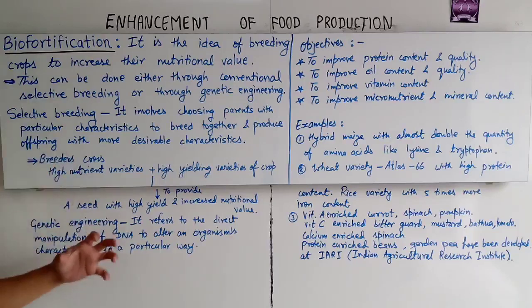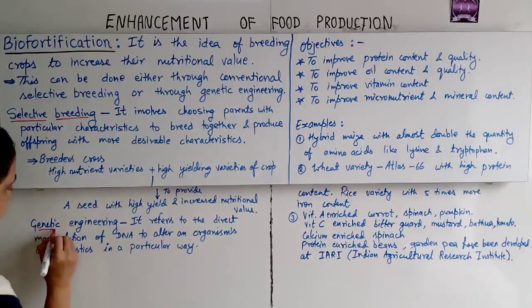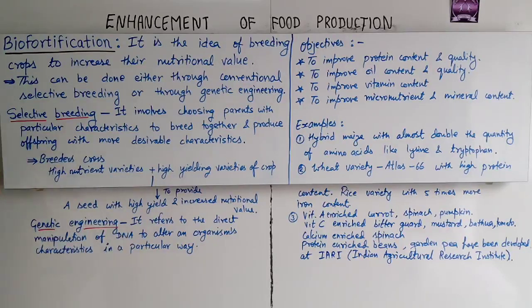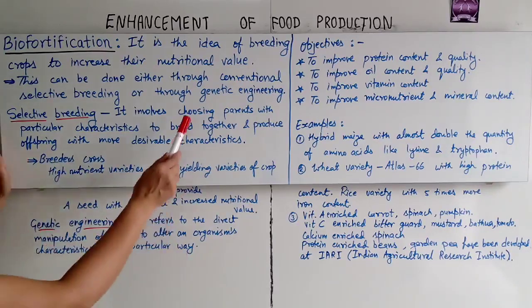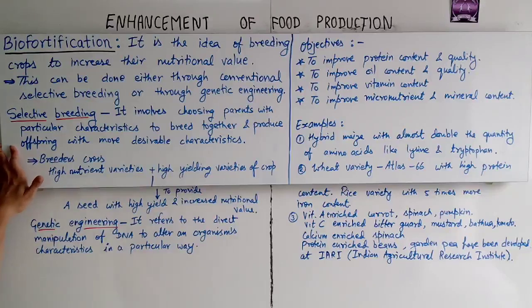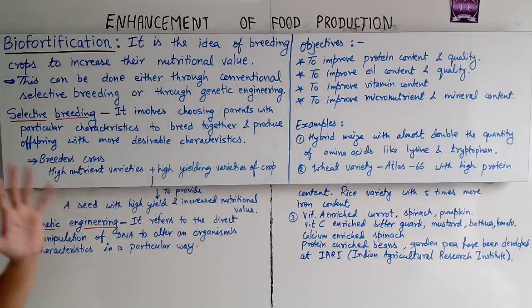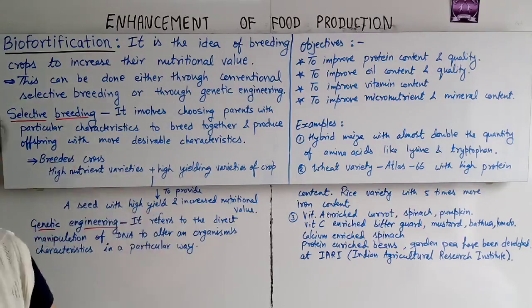Now a little bit of information about selective breeding and genetic engineering. Selective breeding involves choosing parents with a particular characteristic to breed together and produce offspring with more desirable characteristics. This is called selective breeding.